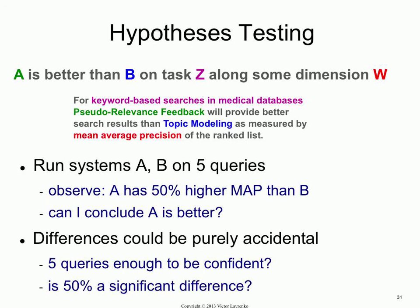The idea behind hypothesis testing is to bring in some basic statistics that were developed a long, long time ago that allow you to rule out the chance that the differences between the two systems are purely accidental — or rather, to say that the probability of that happening by chance is really, really small, so therefore you're going to disregard it.